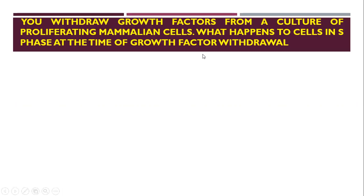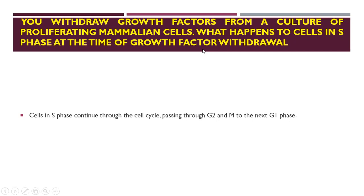If you withdraw growth factors from a culture of proliferating mammalian cells, what happens to the cells in S phase at the time of withdrawal? Since those cells have already crossed the checkpoint, they will just continue — passing through G2 and M — into the next G1. If the growth factor had not been present initially, the cell cycle would not have continued and would be arrested. But once a cell has entered the cycle and crossed the S phase checkpoint, it will complete the full cycle.